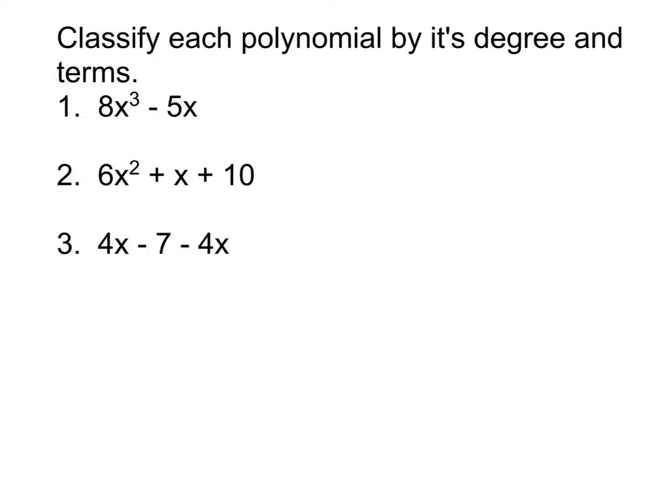Remember, degree is just a fancy mathematical word for the highest exponent. So the highest exponent in number one is three. You look back at your notes and say, okay, if it's degree three, what do we call it? In your notes, you should find that degree three is called cubic. So that's classifying by degree. Now we need to classify by number of terms. Terms are separated by addition and subtraction. So in this problem, we have two terms. If there are two terms, what do we call that? Binomial. So number one is a cubic binomial.